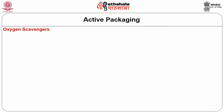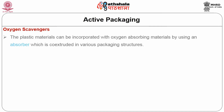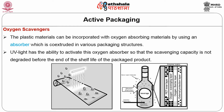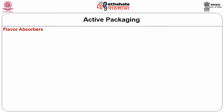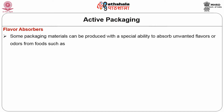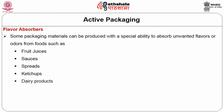Let us know the role of oxygen scavengers in active packaging. Plastic materials can be incorporated with oxygen absorbing materials using an absorber co-extruded in various packaging structures. UV light has the ability to activate these oxygen absorbers so that the scavenging capacity is not degraded before the end of the shelf life of the packaged product. Some packaging materials can also be produced with a special ability to absorb unwanted flavors or odors from foods such as food juices, sauces, spreads, ketchups, dairy products, etc. Such a process is called scalping.